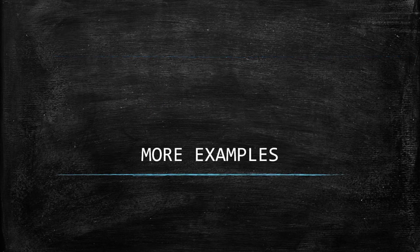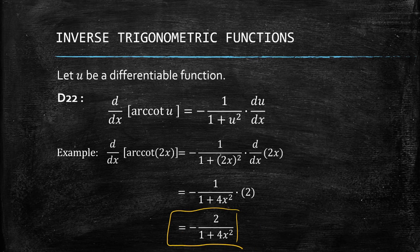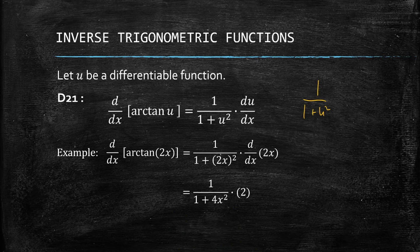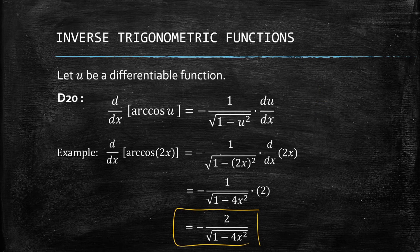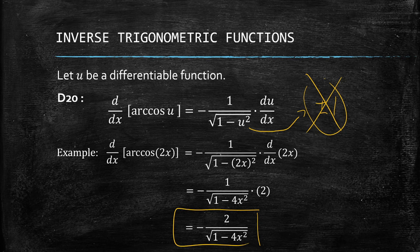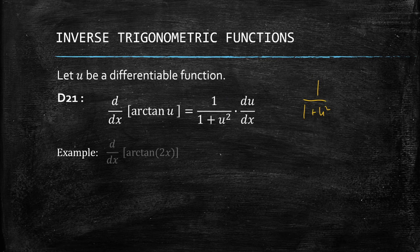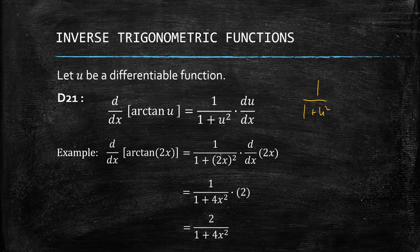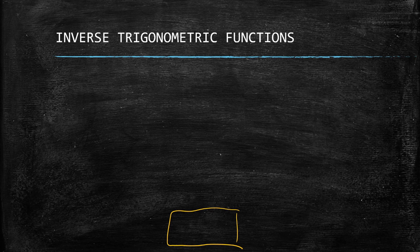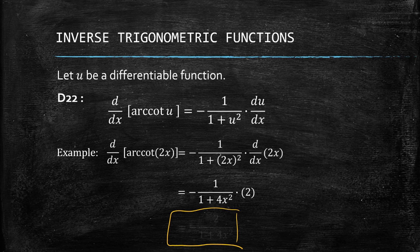Some things to take note of: for arcsin and arccos, u can never be positive or negative 1, because the domain requires it to be strictly between negative 1 and 1. If u equals 1 or negative 1, the expression under the radical becomes 0 and is undefined. Similarly, arcsec and arccsc cannot have u equal to 1 or negative 1 — so arcsin, arccos, arcsec, and arccsc all require u to not be equal to positive or negative 1.